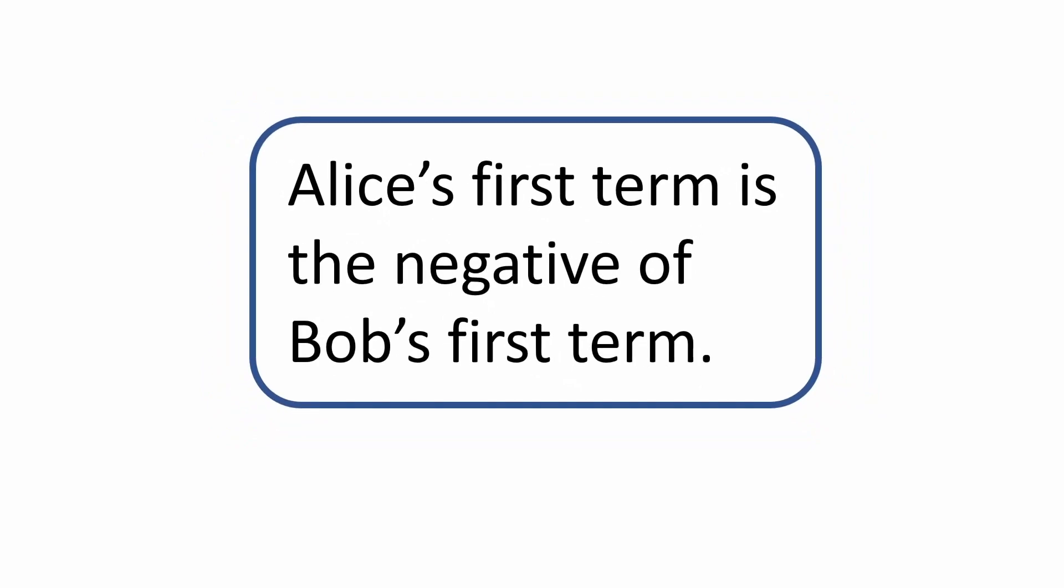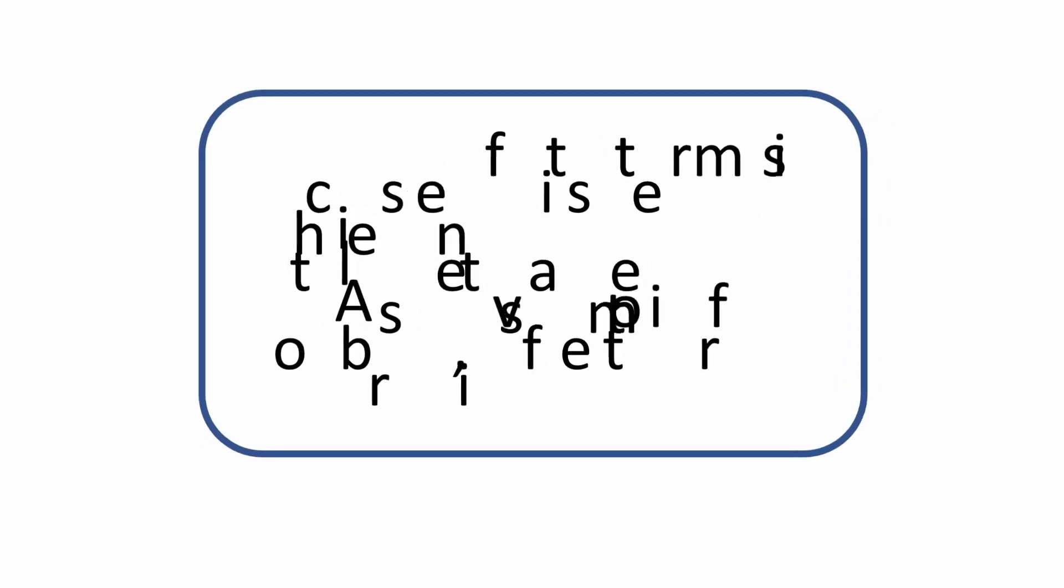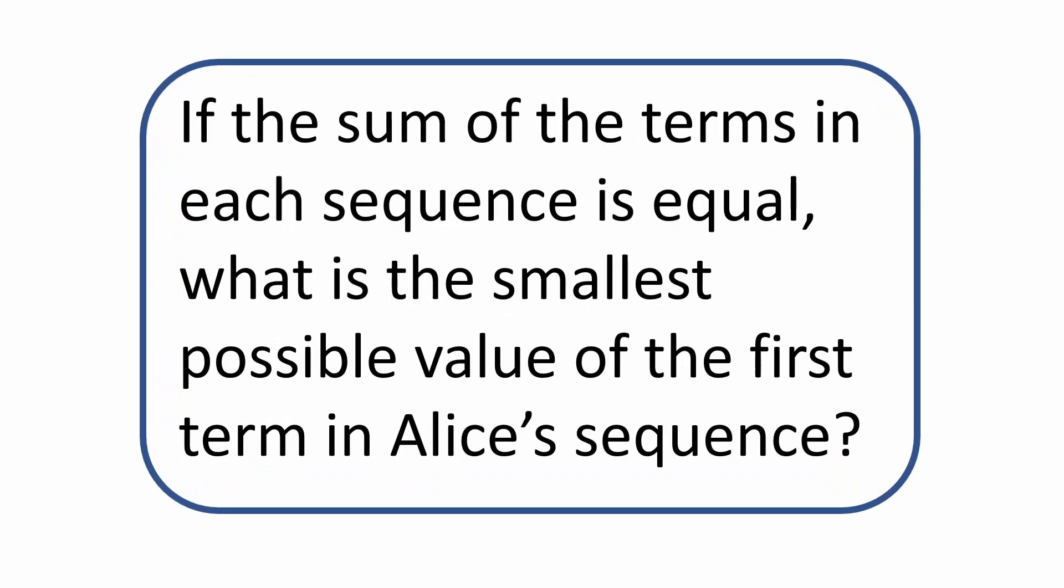Alice's first term is the negative of Bob's first term. If the sum of the terms in each sequence is equal, what is the smallest possible value of the first term in Alice's sequence?